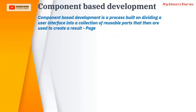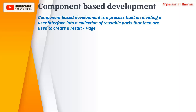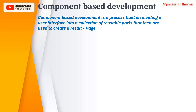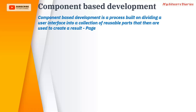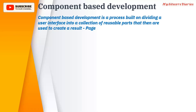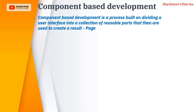Component-based development is a process built on dividing a user interface into a collection of reusable parts that are then used to create a resulting page. In component-based development, you do not develop pages like a home page or a contact us page. What you develop are components, which are reusable parts. In the home page you have a header — header is a component, footer is a component. You develop the header and footer and then assemble them into a page. That is called component-based development.